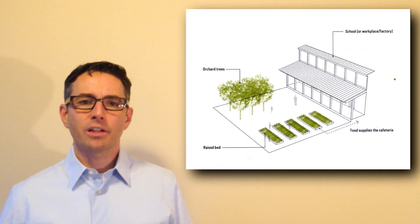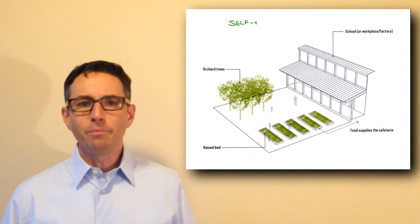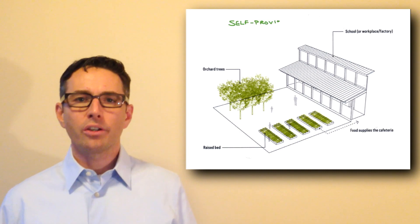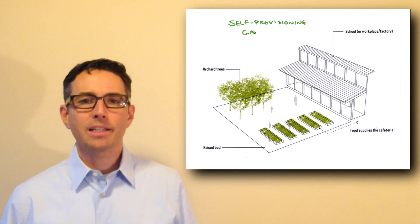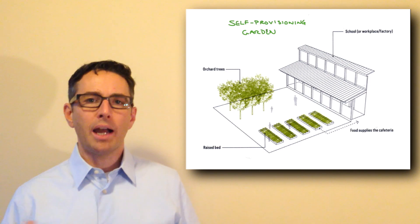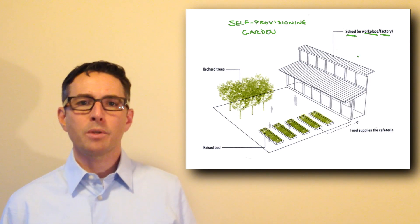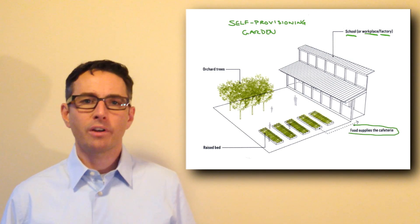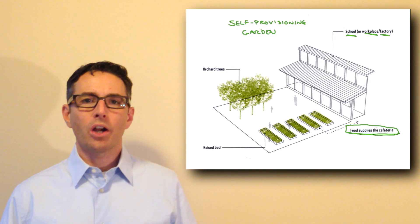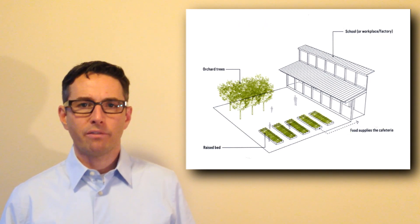The next category is a self-provisioning garden, which looks a lot like a yard garden or empty lot garden, except it's been associated with some kind of organization that benefits from the produce grown there. Often this would be used for schools or retirement homes, community homes of various kinds, where a small urban farm is created and the school or institution benefits from the produce.